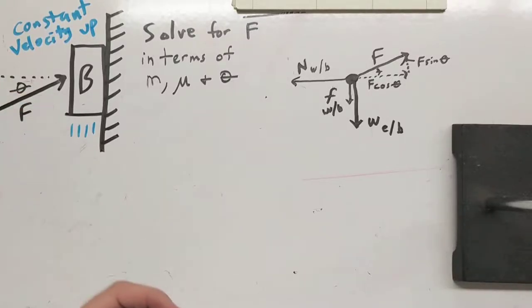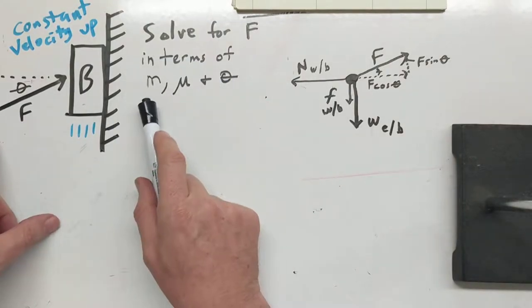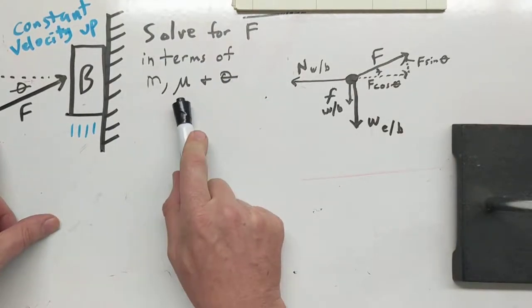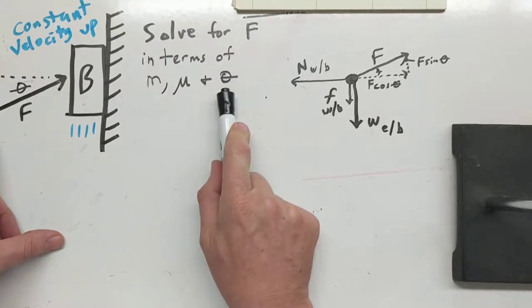Okay, in this problem we have a box moving up a wall, being pushed at an angle, but it's moving at a constant velocity, so we know all of our forces have to equal. We're asked to solve for this applied force in terms of the mass of the box, the friction coefficient, and the angle.